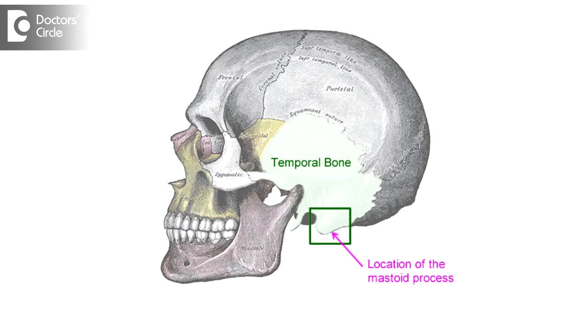The ear ossicles, or ear bones, are housed in a bone called the temporal bone, and the mastoid is a part of the temporal bone. When there is a lack of ventilation or aeration, the mastoid air cells become sclerosed.